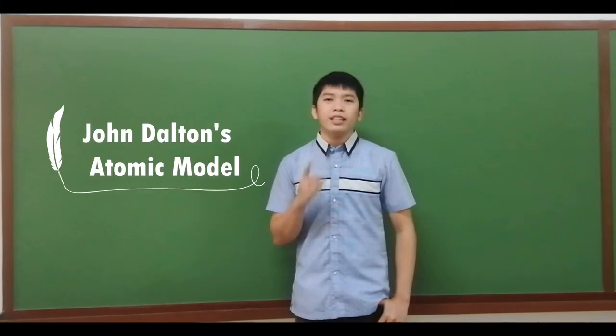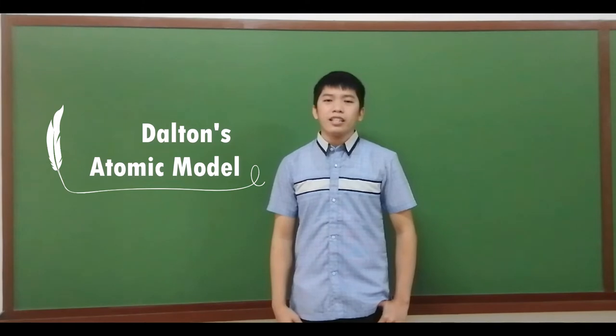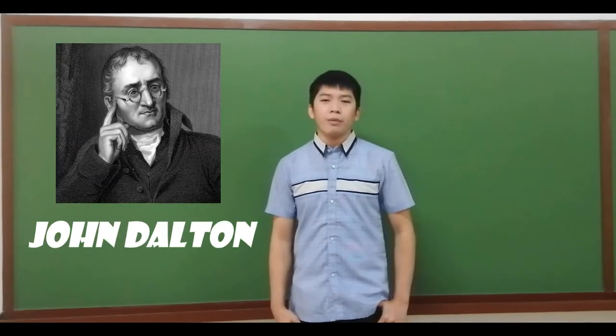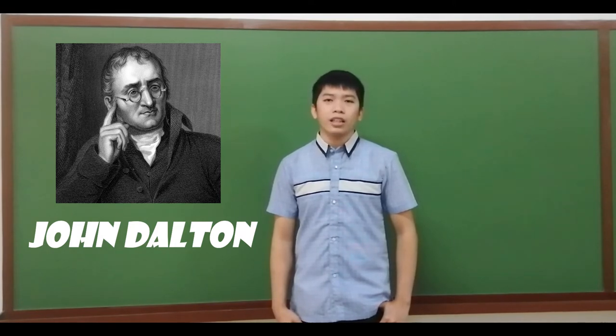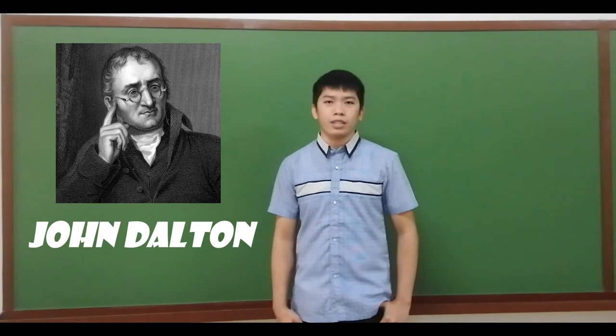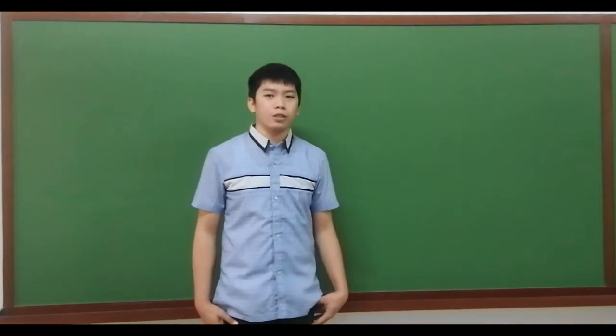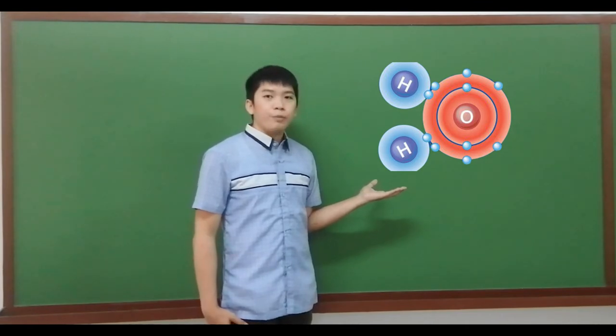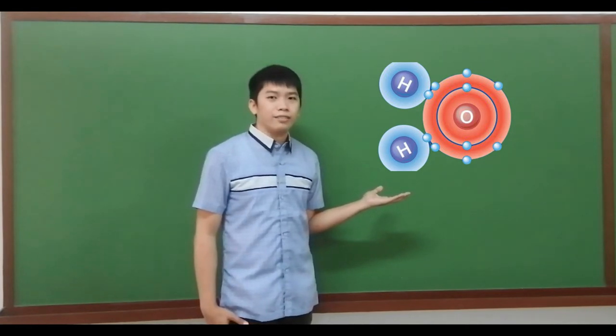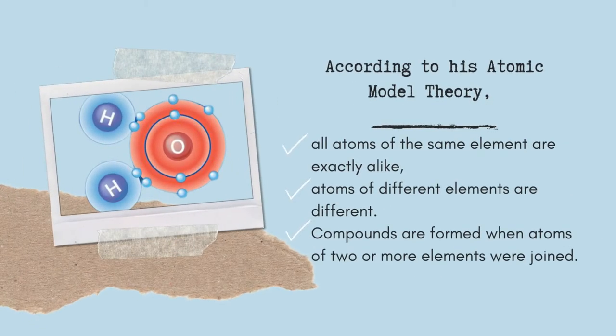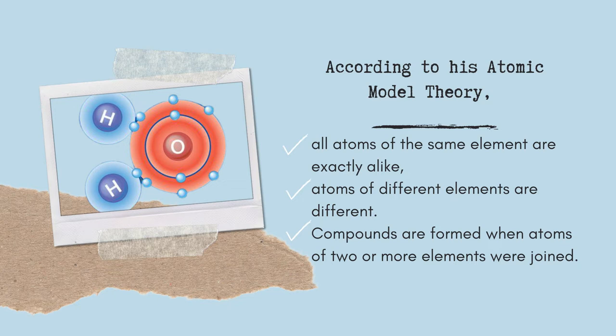Next, we have John Dalton's atomic model. In the early 1800s, an English chemist named John Dalton performed a number of experiments that eventually led to the acceptance of the idea of atoms. Dalton deduced that all elements are composed of atoms. Here is the atomic model proposed by John Dalton. According to his atomic model theory, all atoms of the same element are exactly alike, while atoms of different elements are different. Compounds are formed when atoms of two or more elements were joined.